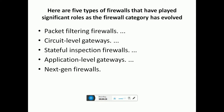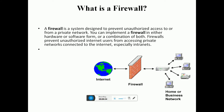What is a firewall? The firewall is a system designed to prevent unauthorized access to or from a private network. You can implement a firewall in either hardware or software. There are two types of firewalls: hardware and software. The combination of both firewalls prevents unauthorized internet users from accessing the private network.